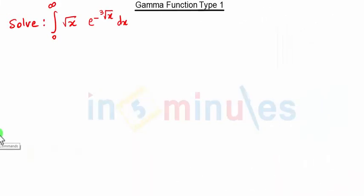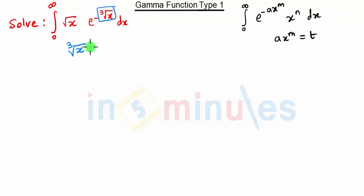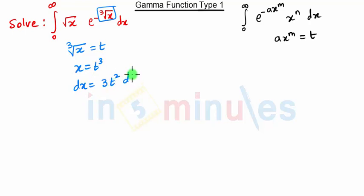So solve this equation. If you see, this equation is nothing but integration of 0 to infinity, e raise to minus cube root of x, times x raise to n, dx. Here we substitute cube root of x equal to t. Then we take the cube, getting x equal to t cube, and dx will be 3t square dt.